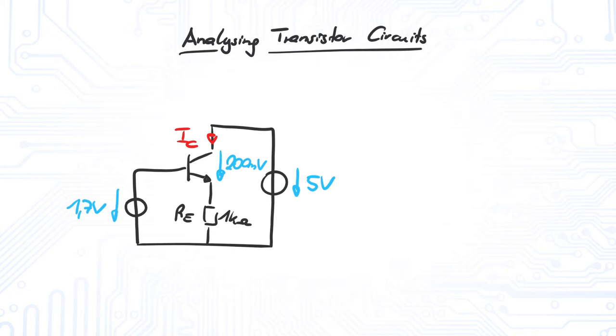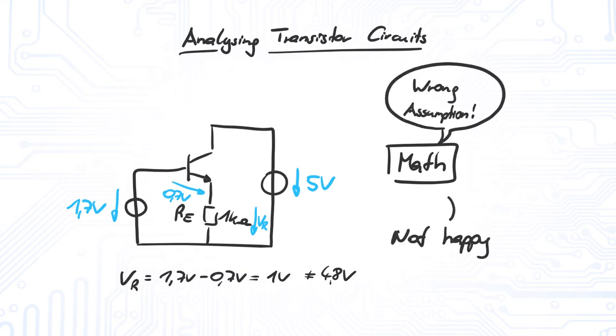This means the voltage at the resistor has to be 4.8 volts. But if we solve for Vr from the base, we end up with a different result. Here we get Vr equals 1 volt. This does not match our previous result. Clearly, math tries to tell us that our assumption is wrong.